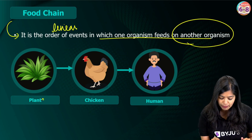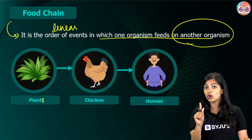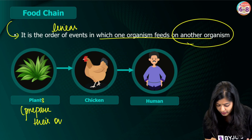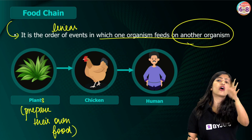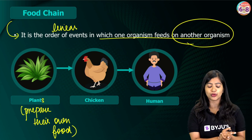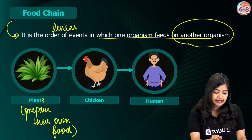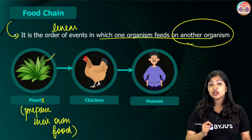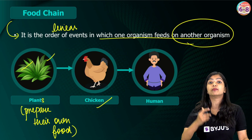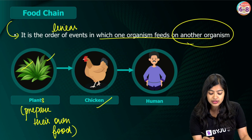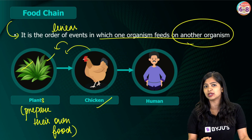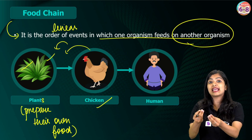Let's take this example. We have plants — organisms that prepare their own food. Green plants do photosynthesis and make their own food, not dependent on any other organism. Sometimes the grains from these plants are fed on by other animals. Animals such as deer may eat the plant directly, or a chicken may feed on the grains. So chickens and deer are dependent on plants, as are various other animals, because plants are their source of food.